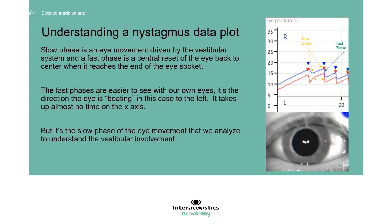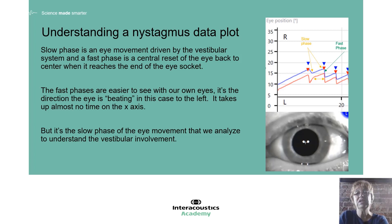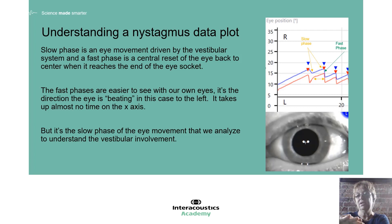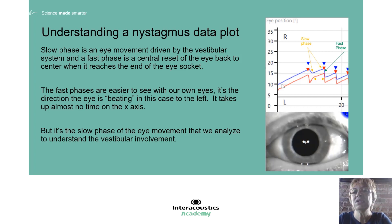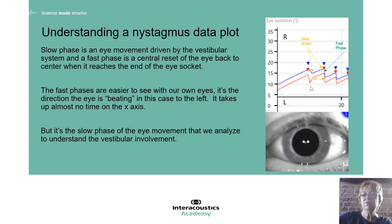Let's take a second to understand how this is plotted in the software. Nystagmus has two phases: a slow phase, and then it corrects with a fast phase back to center the eye. The eye moves in the socket as far as it can and then centers back. The slow phase is the vestibular system driving the eye, and the fast phase is the correction from the central nervous system to bring the eye back to center. On the graph, blue is the left eye and red is the right eye — we see the slanting slow phase and then a very fast drop back down to re-center the eyes.